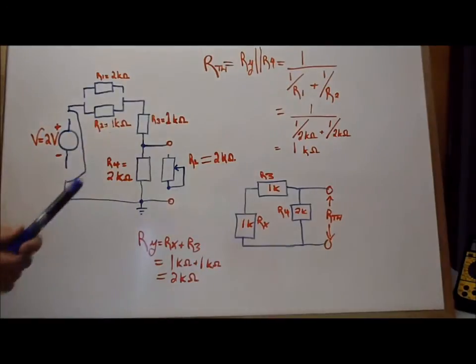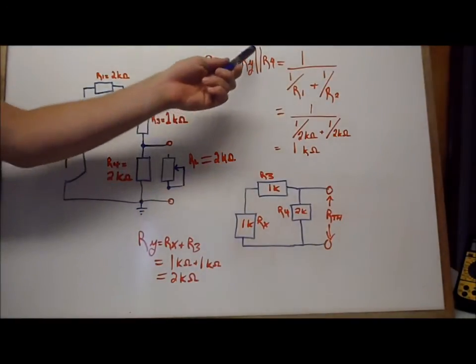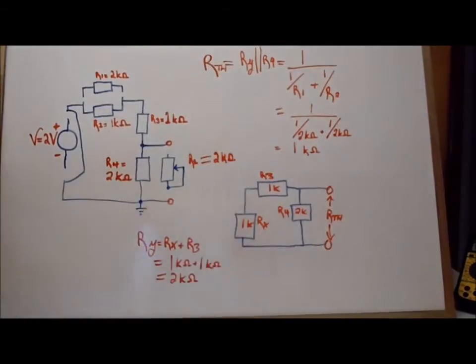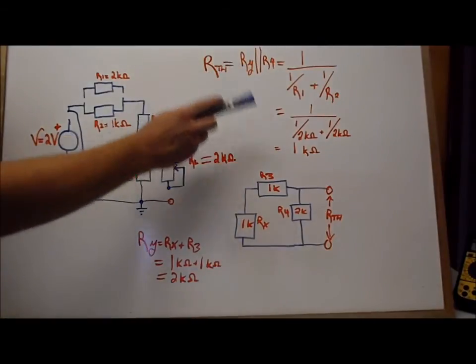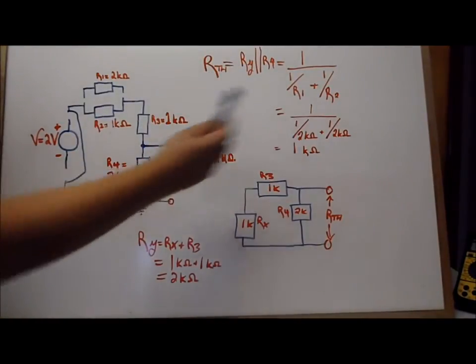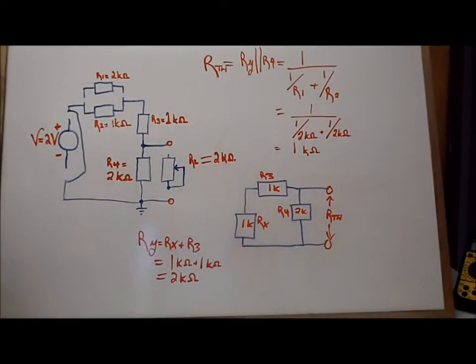So our Thevenin's resistance is going to be equal to RY in parallel to R4. And what we determined is that once again we have two kilo ohms in parallel to two kilo ohms. So it's half of one resistance value if they're perfectly the same. So that means that the R Thevenin's for equivalent circuit is going to be really dumbed down to one kilo ohm.